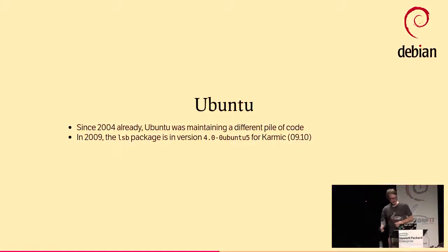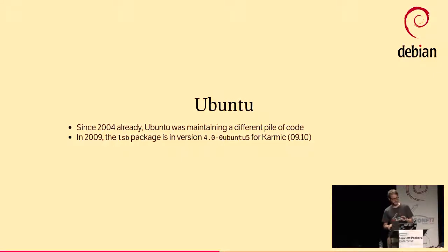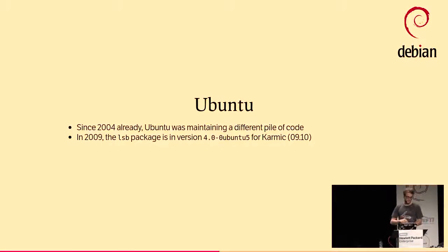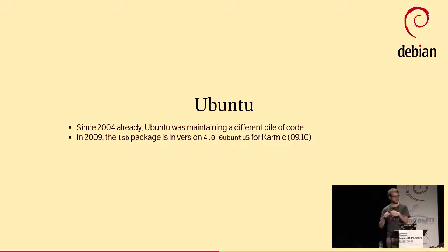We have a famous distribution who was already maintaining a different pile of code to try to achieve LSB compatibility on their own. Ubuntu, since 2004, had people working on an LSB compatibility layer. So in 2009, when we had version 3.2, they had already the 4.0 LSB compatibility layer for Karmic.